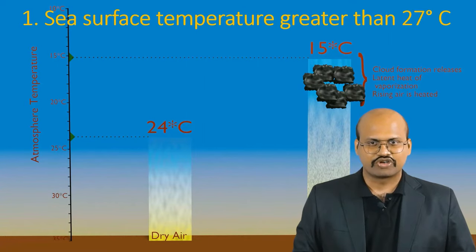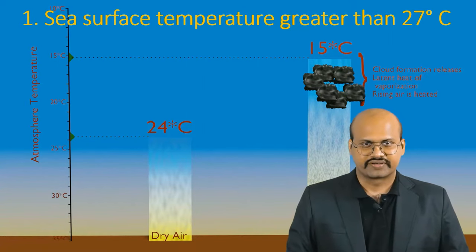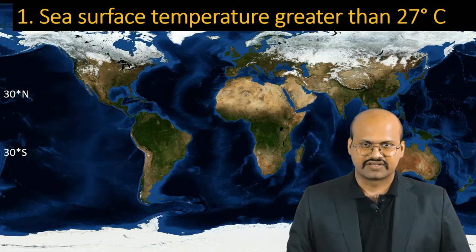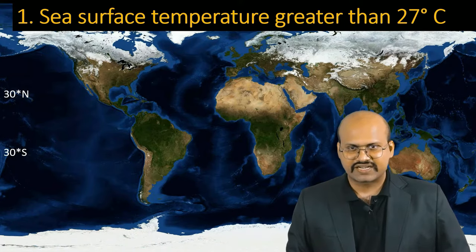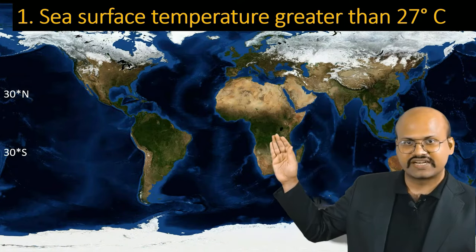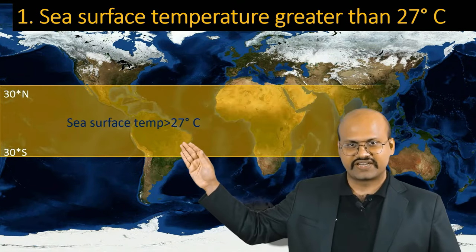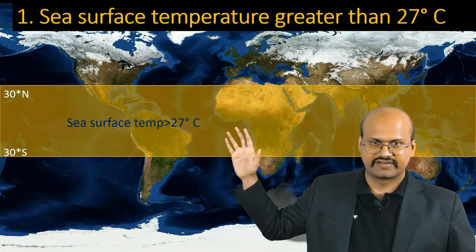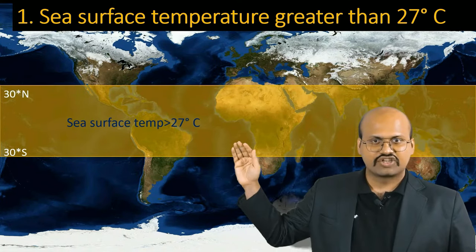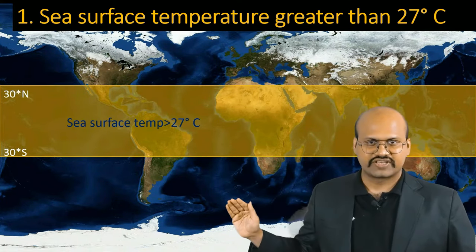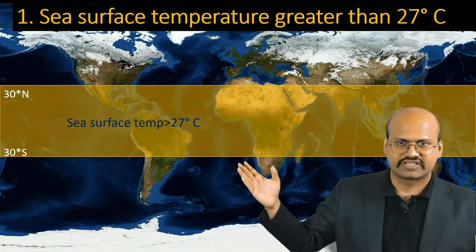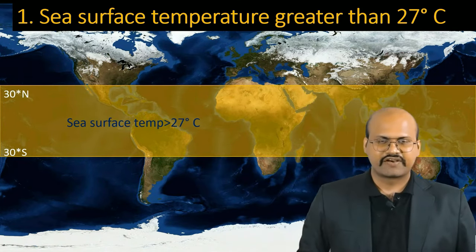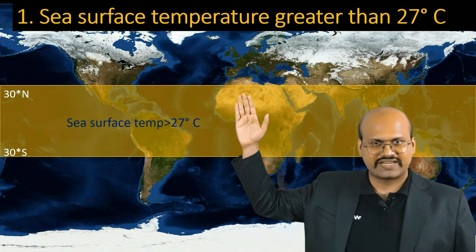Looking at the sea surface temperature map, sea surface temperature is greater than 27 degrees Celsius only in the highlighted equatorial region. North or south of this region the sea surface temperature never crosses this threshold, therefore formation of cyclones outside this region is improbable.